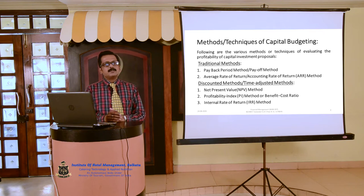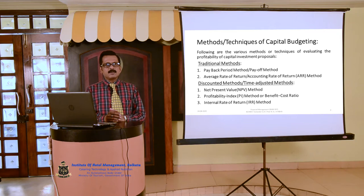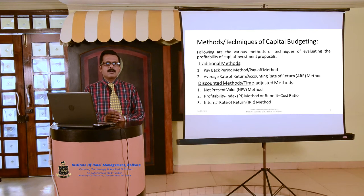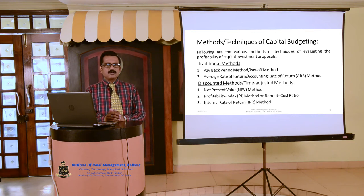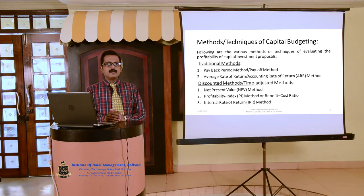In traditional methods, there are two methods: number one, payback period method or payoff method; number two, average rate of return or accounting rate of return method, shortly called ARR method. The discounted or time adjusted methods are three: number one, net present value method or NPV method; number two, profitability index method or benefit cost ratio, shortly called PI method; number three, internal rate of return method, shortly called IRR method.